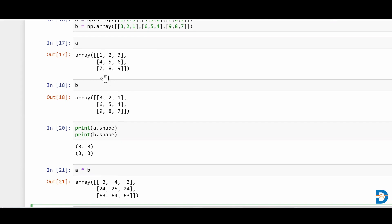So element-wise multiplication is happening. One is getting multiplied by three and you are getting three. Two is getting multiplied by two and you are getting four. Three is getting multiplied by one and you are getting three. Similarly, four multiplied by six and we are getting 24. So each and every element is getting multiplied to the corresponding element at the same position of the other matrix. And we are getting element-wise multiplication over here.